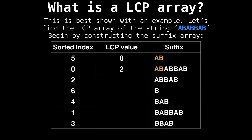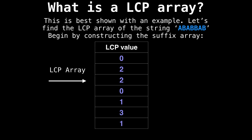Now we move on to the next two suffixes — notice that they also have an LCP value of two. And the next two don't have anything in common, so we place a zero. The next two only have one character in common, then three characters in common, and lastly only one character in common.